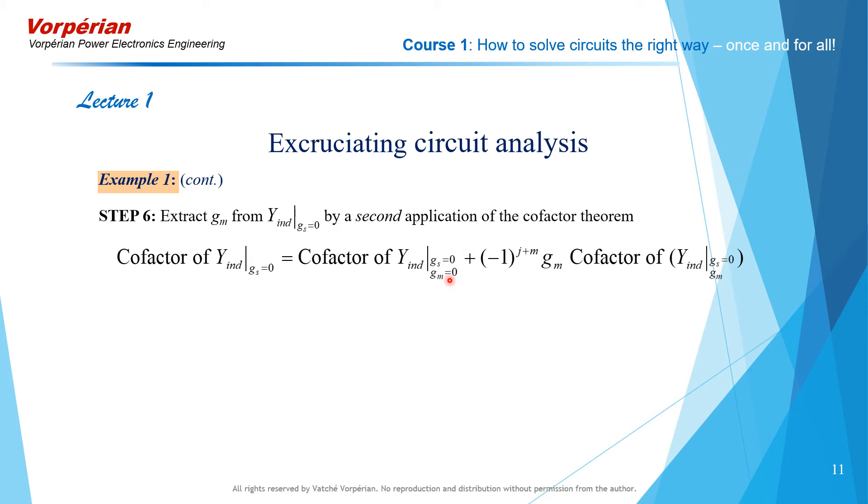So, first we set gm equal to 0, then by striking out the proper rows and columns in this matrix here, we'll obtain another indefinite matrix, which does not contain Gs or gm, and gm appears up front as a parameter.